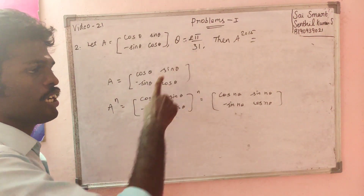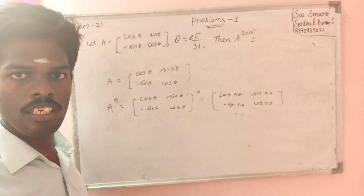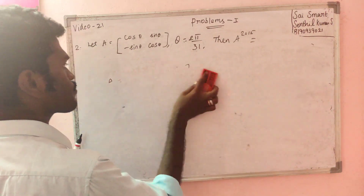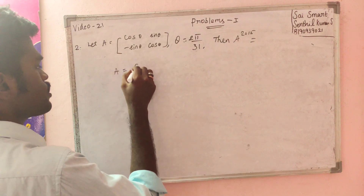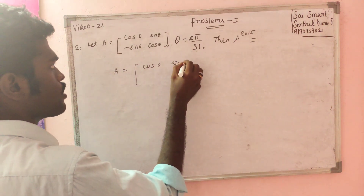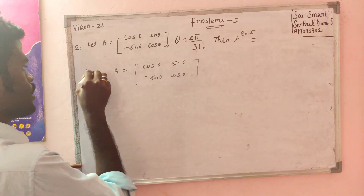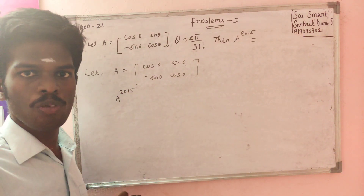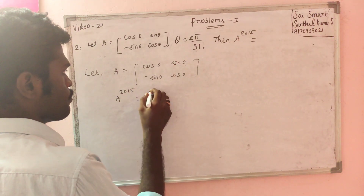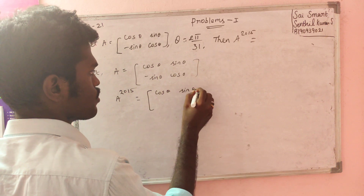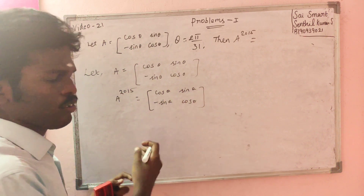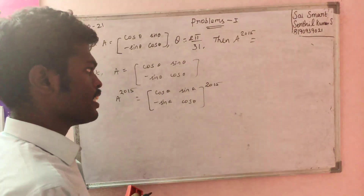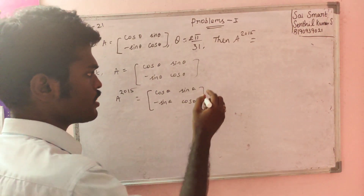Applicable for those known values of theta. Theta here — you can apply for the same thing. Theta is 2π/31, 1st, and apply for the same thing. This gives minus sin theta, cos theta. Here, 2 divided, 1 divided. In 2015, you will rise. Rise in 2015 can be written as 31 into 65.